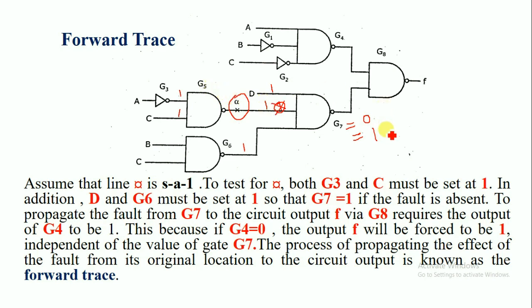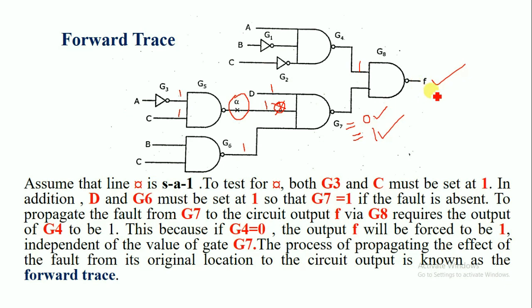So when the fault is absent the G7 output equals 1; otherwise the G7 output equals 0. To propagate this fault from G7 to the output F, we have to make the gate G4 output equal to 1. This is because if G4 equals 0, the output F will be forced to 1 irrespective of the G7 output — the output of gate G8 (F) will automatically become 1. That is why we must make gate G4 output equal to 1.